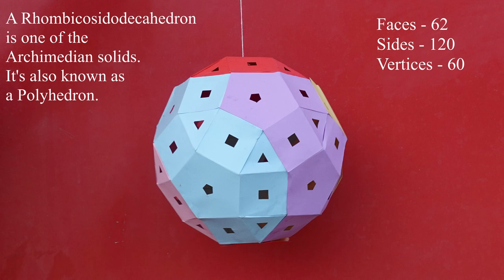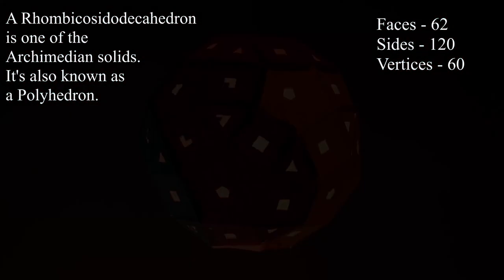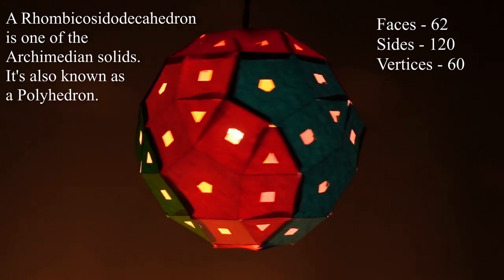This rhombicosidodecahedron has 62 faces, 120 sides and 60 vertices. It is a polyhedron.